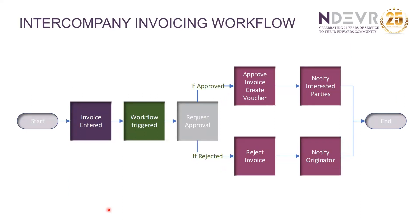This diagram represents the basic flow for intercompany invoicing. First, the invoice is entered. Then invoice information is sent to a workflow and the workflow is triggered. A message is sent to the approver requesting approval. If approved, the invoice status is changed to approved, the corresponding voucher is created, and interested parties are notified. If rejected, the invoice status is changed to rejected and the originator is notified so it can be corrected.